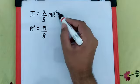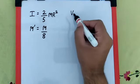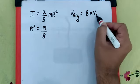Now we also need the relation between the R of the big sphere and r of the small sphere. For which I can say the volume of one big sphere is going to be eight times the volume of one small sphere.